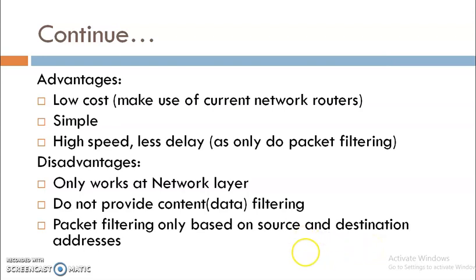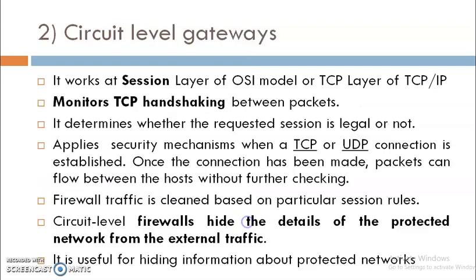The disadvantage of a packet filtering firewall is that it only works at the network layer and does not provide content filtering. It only checks the packet source and destination address, and if acceptable based on rules, forwards the packet; otherwise it drops it. It does not perform content-level data filtering and does not check any application vulnerabilities. That is one of the main drawbacks of packet filtering firewall.